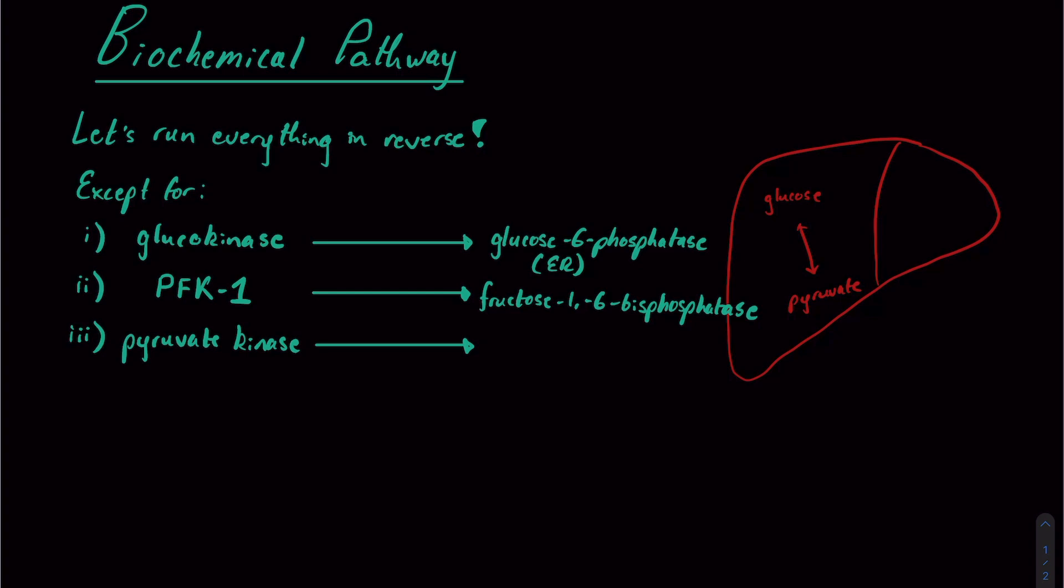And then third, pyruvate kinase, this is where it gets a little trickier. Because pyruvate kinase is an irreversible step, just at the end of glycolysis, we're going to need to be a little fancier. We actually take pyruvate inside the matrix of the mitochondrion,